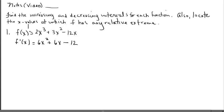To use the first derivative test, we have to find the first derivative. We have to find out where the first derivative is equal to zero or does not exist. And remember, it does exist everywhere, so that's not an issue. So let's find the zero slopes — set the derivative equal to zero.